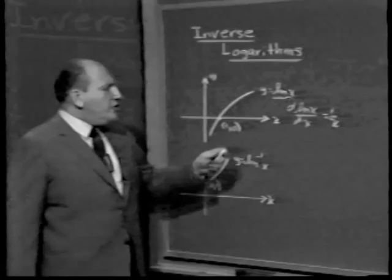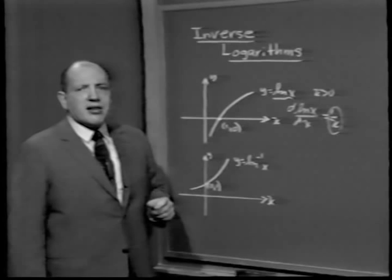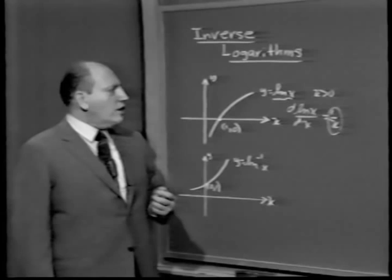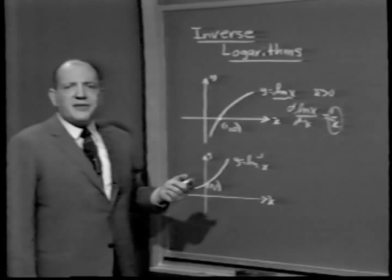The point being that this particular function, since the domain is for positive x, 1 over x is positive. The curve is always rising, which means that the function itself must be 1 to 1. And because the function is 1 to 1, it means that the inverse function exists. This is no different from any other example of forming f inverse, given a 1 to 1 function called f.